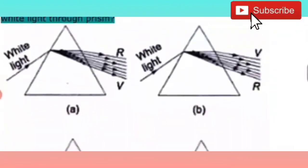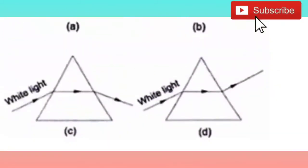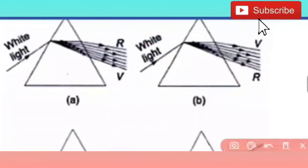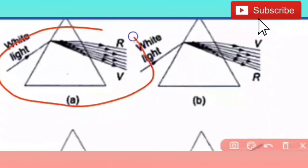The next question: which of the following figures correctly represents the passage of white light through a prism? You are given 4 options. In the first option, white light enters and red and violet emerge; in another, violet and red are shown; and others show nothing clearly. So the right answer is A — red is the least deviated and violet is the most deviated.